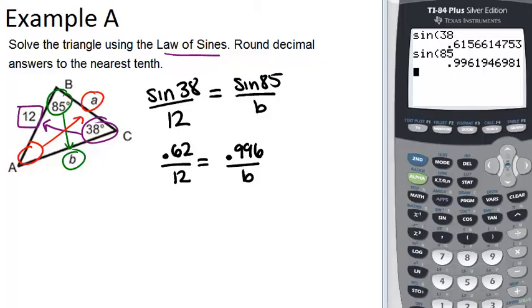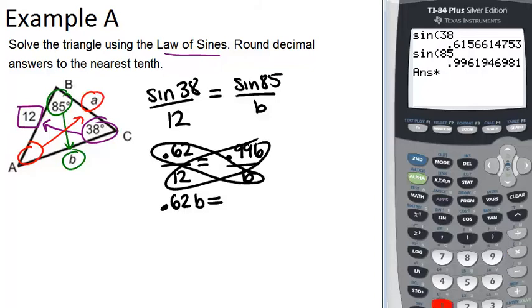And then to solve for B, we just have to cross multiply. So we'll get 0.62B equals 0.996, which is already in our calculator, times 12. So we get 11.95.